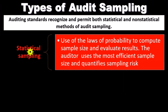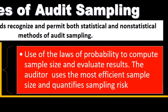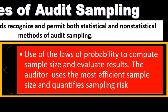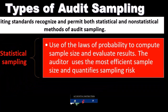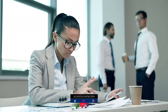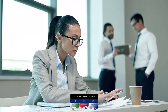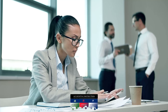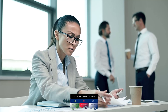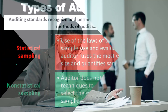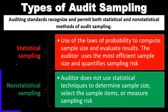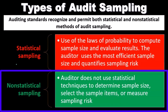We'll start off with the statistical method: use of the laws of probabilities to compute sample size and evaluate results. The auditor uses the most efficient sample size and quantifies sampling risk. Statistical sampling involves a more formal type of sample selection, using statistical mathematical analysis to give us more exact types of calculations than a non-statistical method.